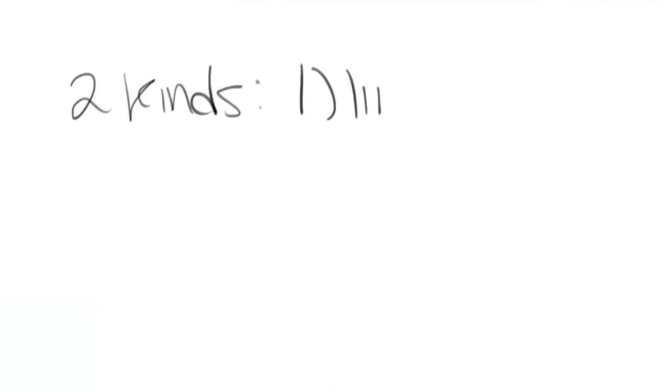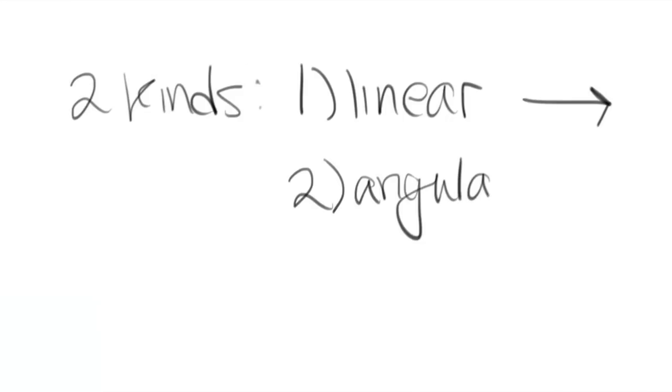There are two kinds of momentum. There's linear momentum, which as the name implies, is the momentum of objects traveling in a straight line. Then there's angular momentum, which as the name also implies, is the momentum of rotating objects, like an ice skater.